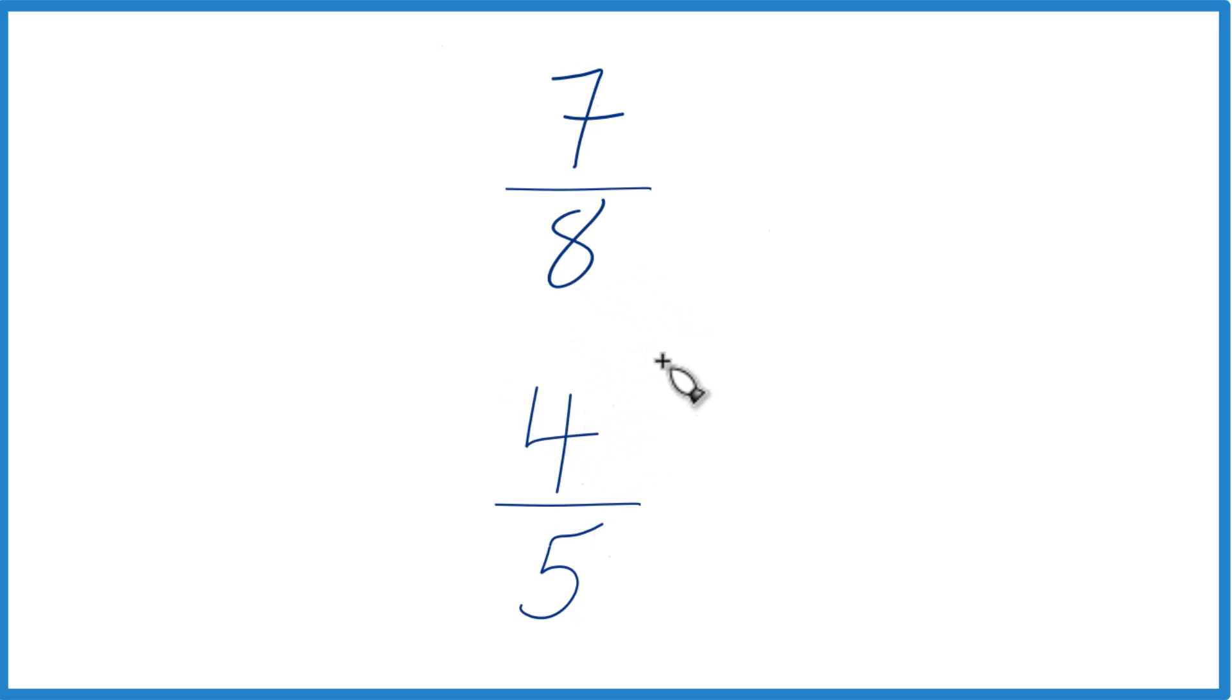We could also find a common denominator. So if we had the same denominator, we just compare the numerators and we'll know whether 7 eighths is greater than or less than 4 fifths. Let's do this.